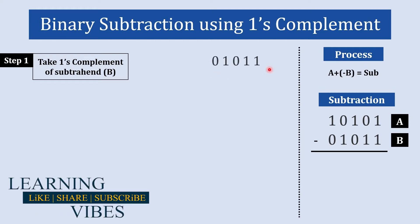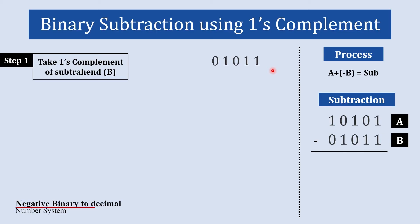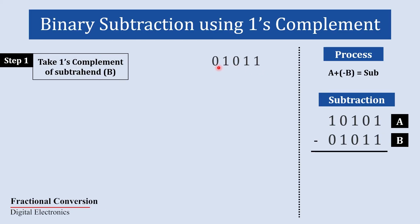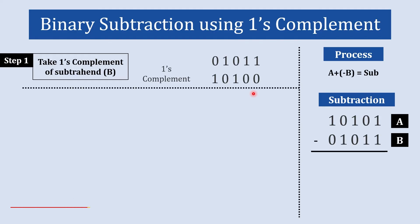So we write our subtrahend and then write its one's complement form. The simplest method, as learned in our previous video, is to replace all the ones with zeros and all the zeros with ones. So the one's complement of this number is 1 0 1 0 0.